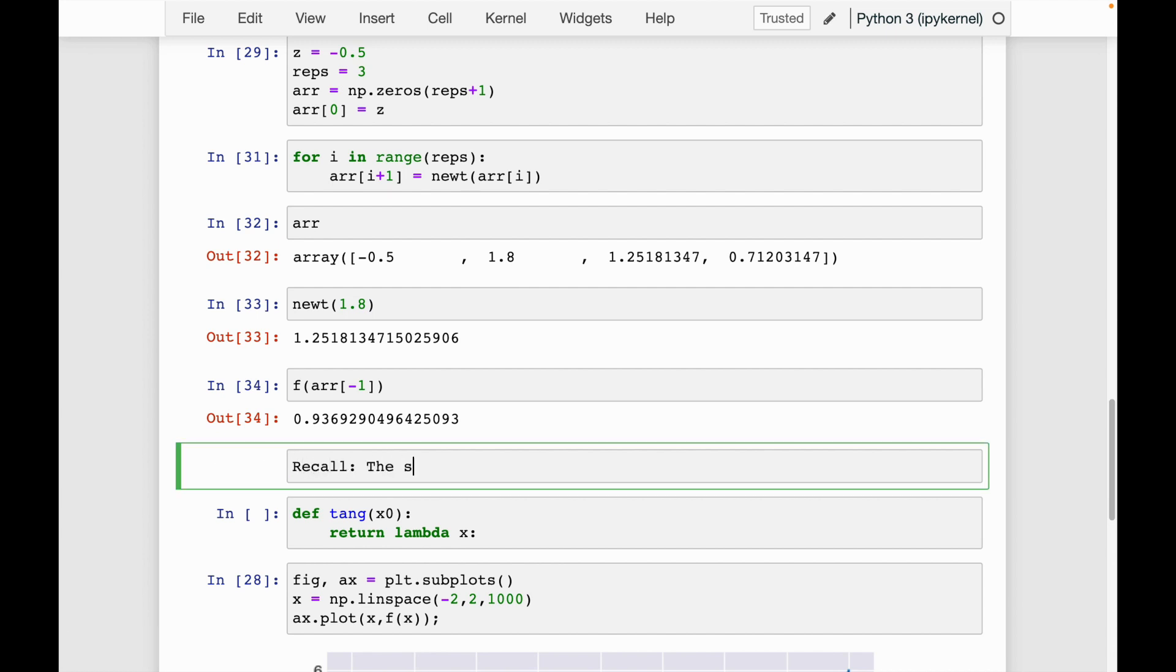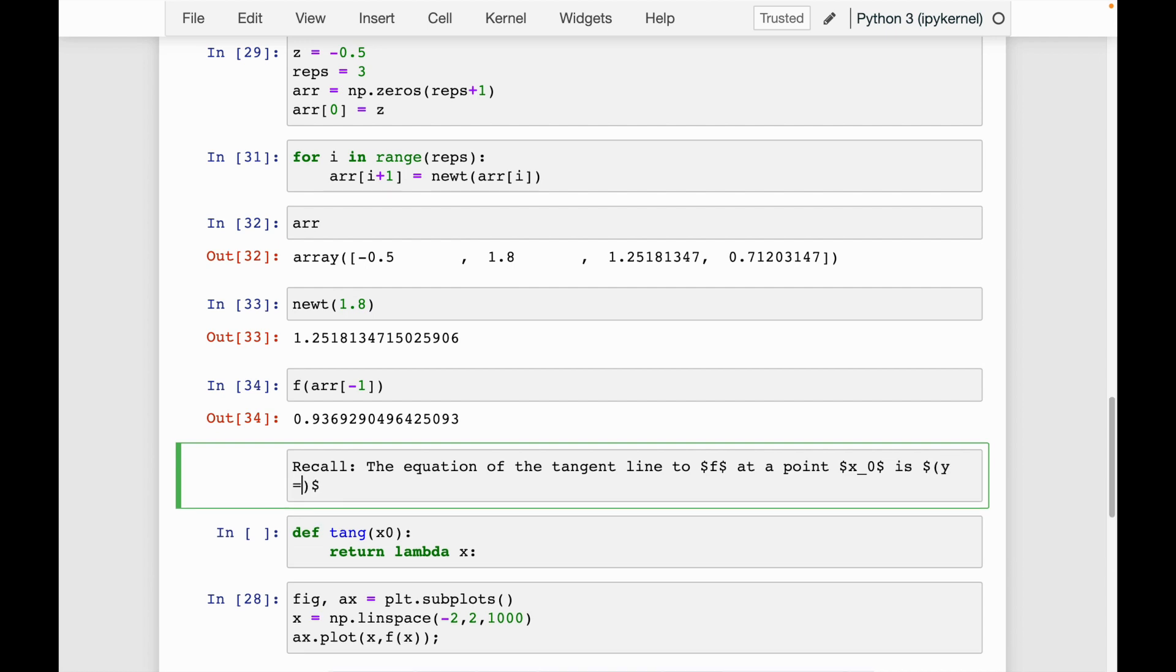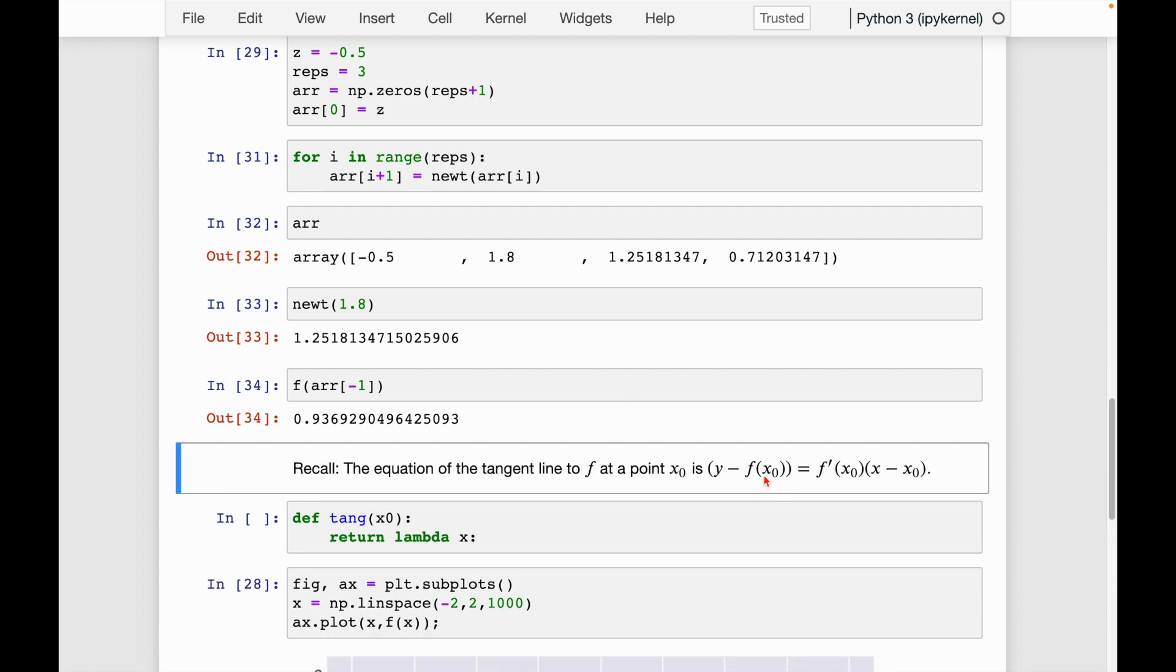I'll say recall the equation of the tangent line to f at a point x naught is given by, so we have y minus f of x naught is equal to f prime of x naught times x minus x naught. So here's the equation. So y minus f at x naught, that's like y one is equal to f of x naught times x minus x naught.